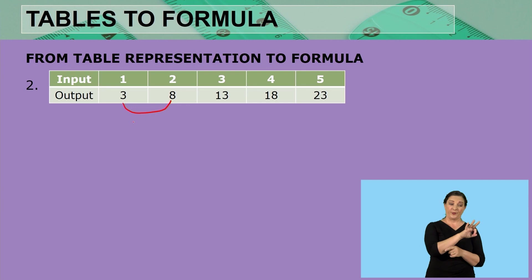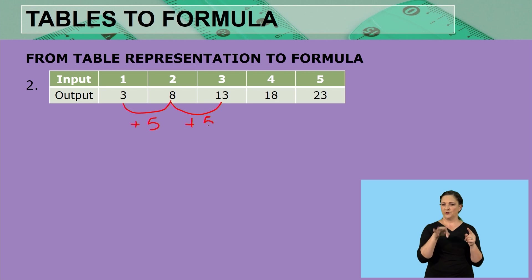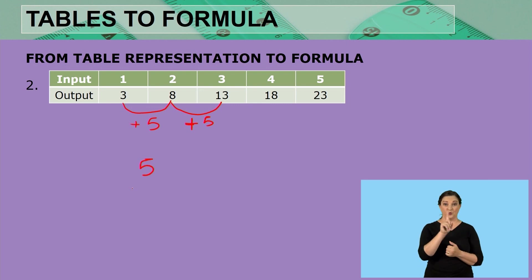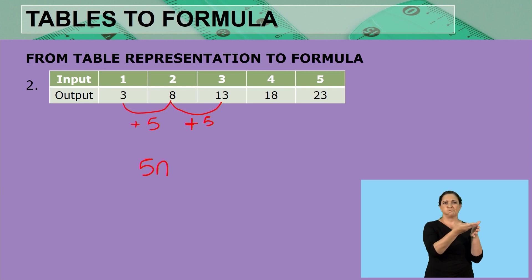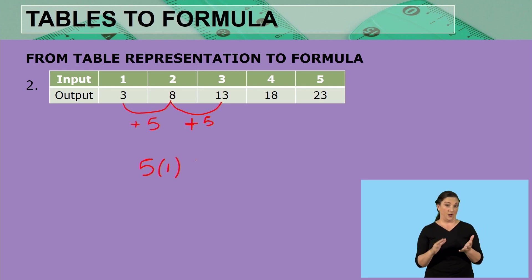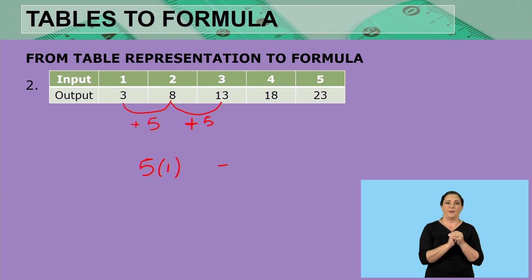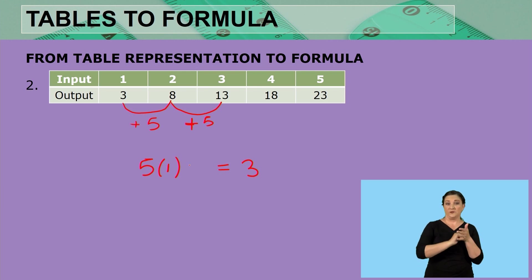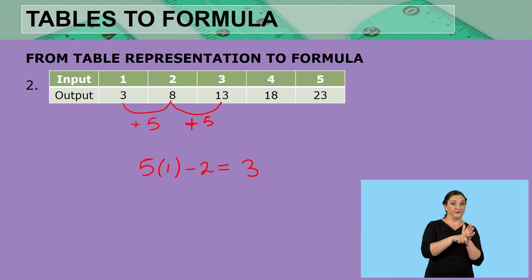From 3 to 8 we are adding 5, and from 8 to 13 we are again adding 5. So we are going to use the 5 and multiply it by the position, and we need to add or subtract something to get to our first term. So 5 multiplied by the first input, which is 1, and we add or subtract to get to 3. If you are thinking of minus 2, then you are correct.